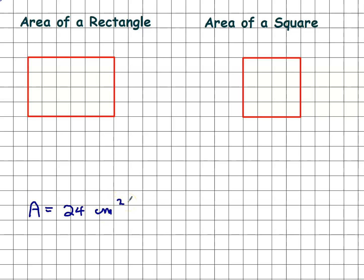Now a shorter way to do that would be to say, well, let's see, I've got six squares in each row and I've got four rows. So another way to do that would be to just say six times four, which gives us the 24 square centimeters.